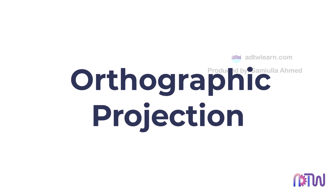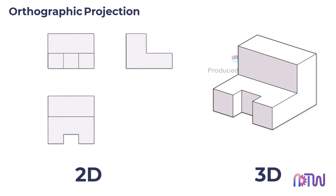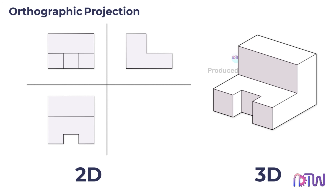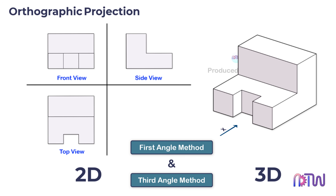Orthographic projection in engineering drawing: we often have to produce 2D and 3D drawings of different parts. These 3D objects need to be shown on 2D planes — that is, X and Y planes — in such a way that we get to see all the views: front view, side view, top view, etc. This type of projection system is known as orthographic projection. In this system, the views have to be drawn by following certain standard projection rules, which are known as the first angle and third angle projection methods.